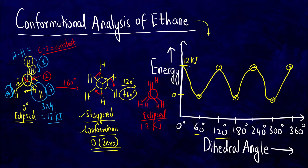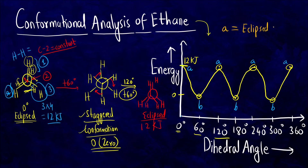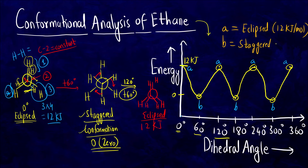Let me label the points. The higher-energy points are labeled A — these represent the eclipsed conformation with 12 kJ/mol strain energy. The lower-energy points are labeled B — these represent the staggered conformation of ethane with 0 kJ/mol strain energy.